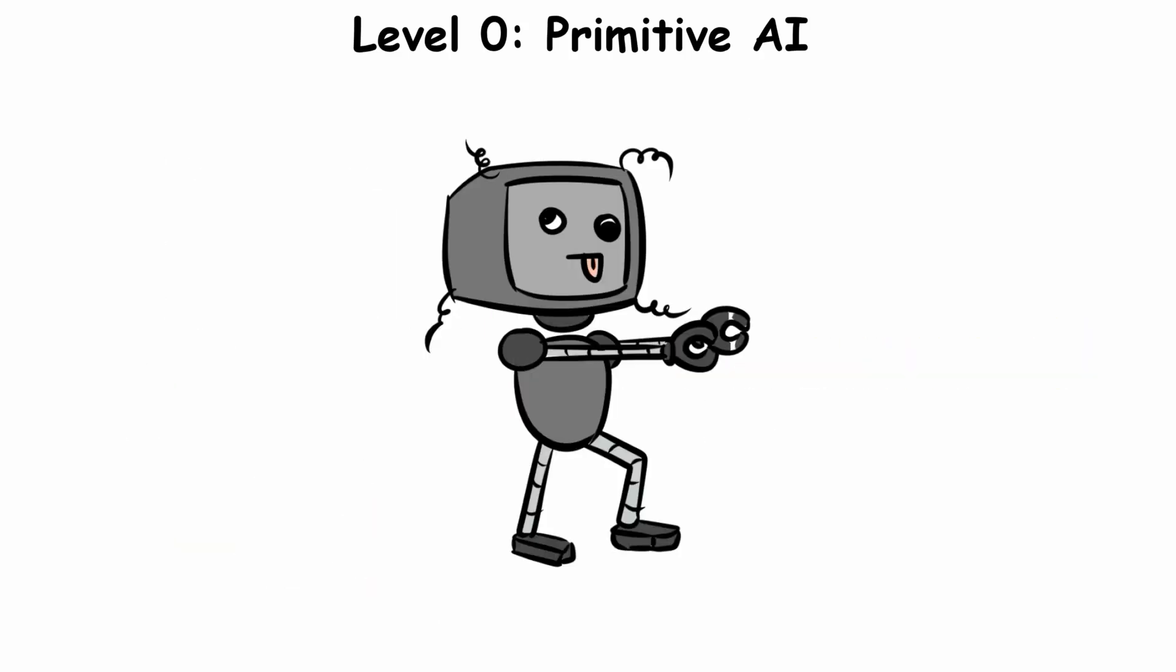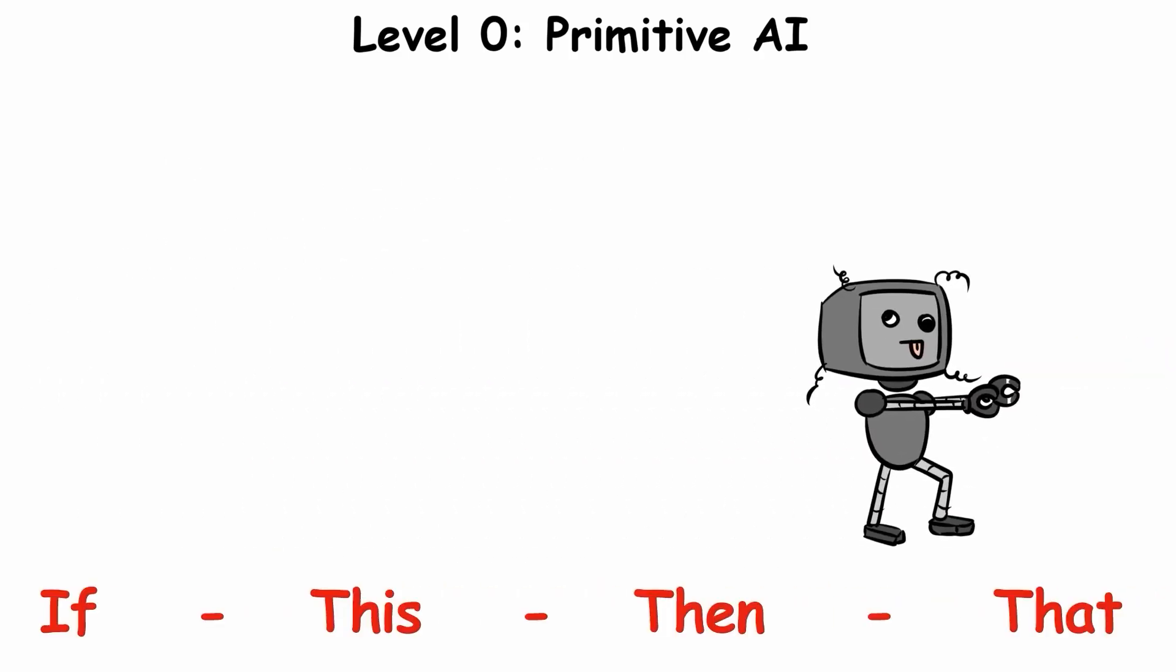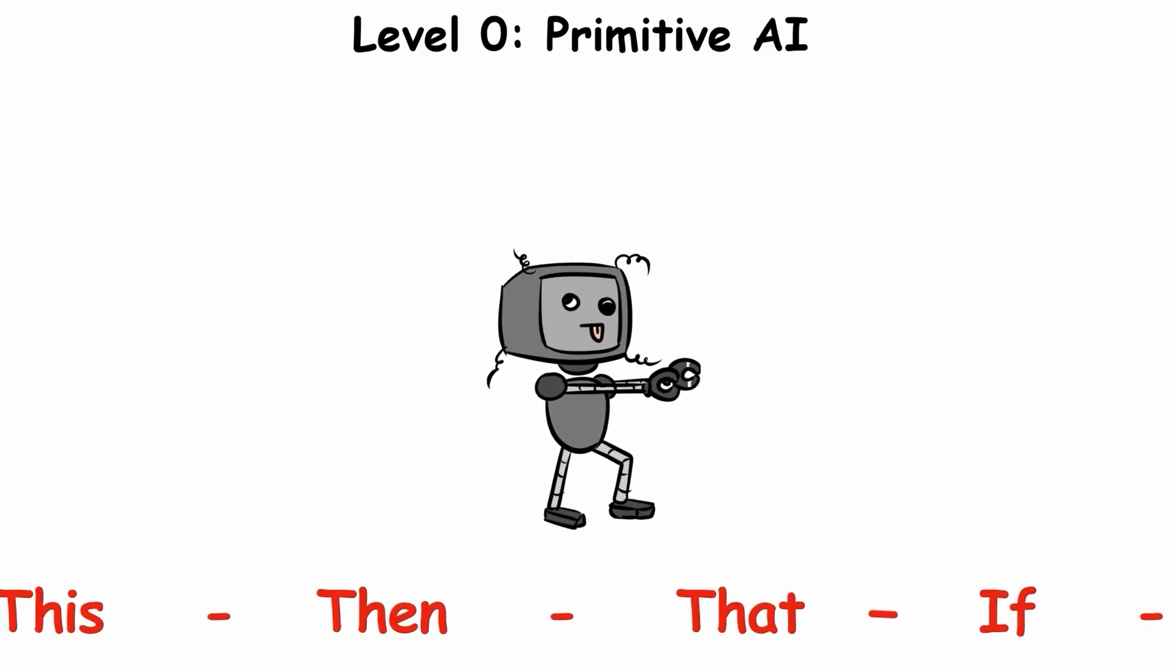The takeaway? Primitive AI follows if this, then that. Instructions that repeat forever, without improvement.